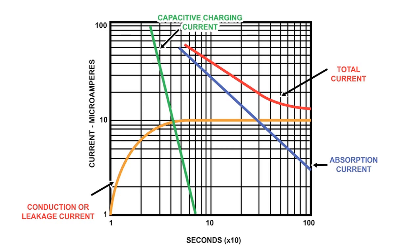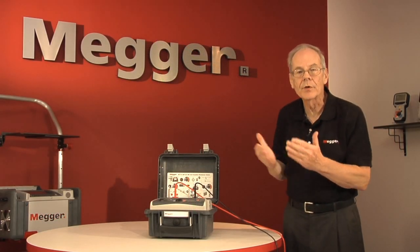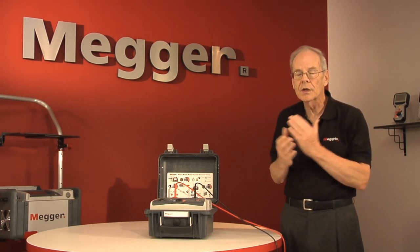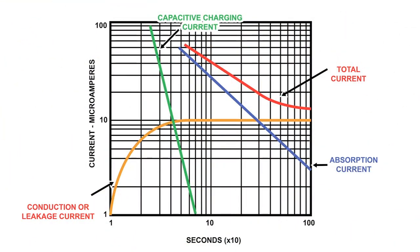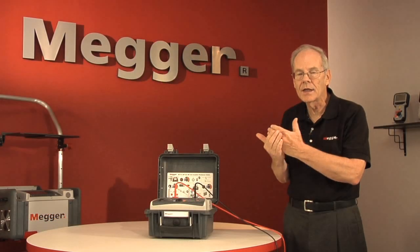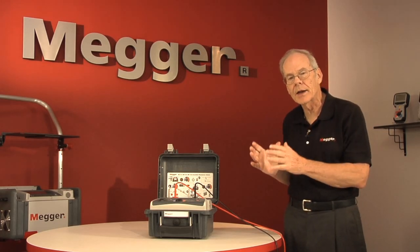Charging diminishes whereas leakage stays relatively constant. So a test item that is pulling primarily charging current will show a much higher number at the end of a time test than at an earlier point. When you create that ratio, you get a number like three, for instance — that gives you confidence the tester was mostly looking at charging current. If you have a lot of leakage, it stays relatively constant, holding the curve down, and you will end up with a ratio somewhere around 1.2 or so, which flags that the test item may not be in great condition.